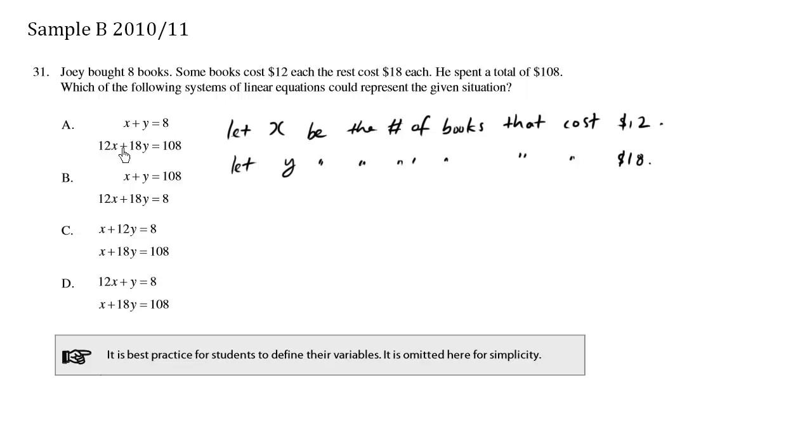Some books cost $12 each. So here, if X is the number of these cheaper books, and that's how many he has, 12 times the number of books is going to be the total cost represented